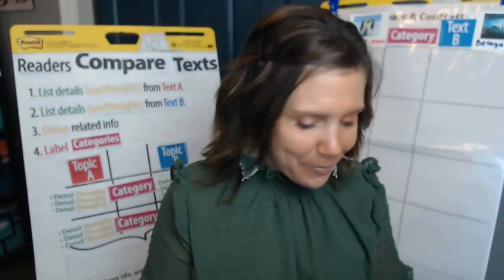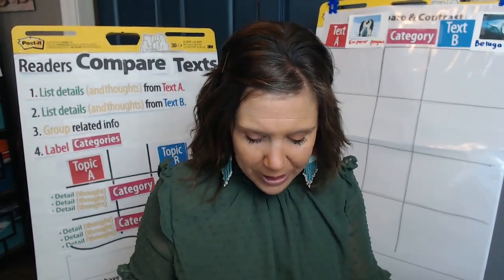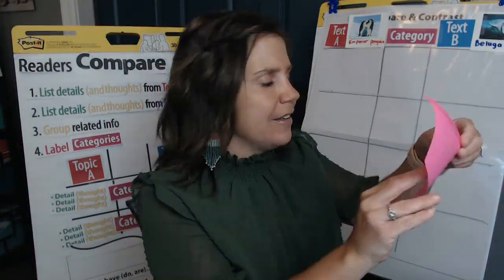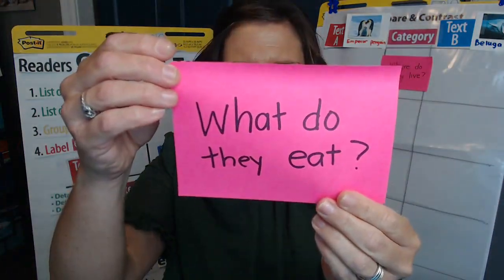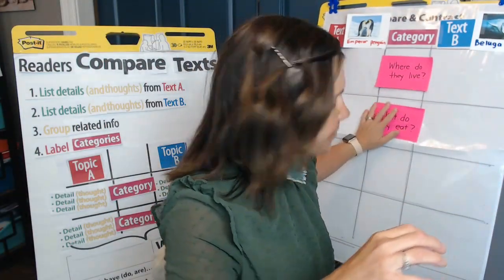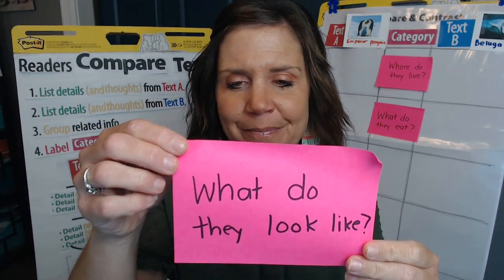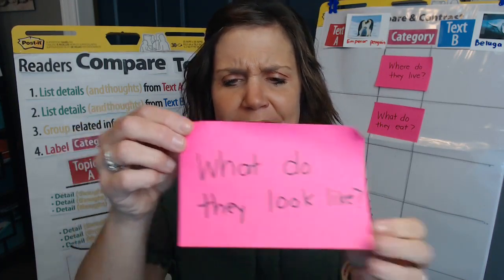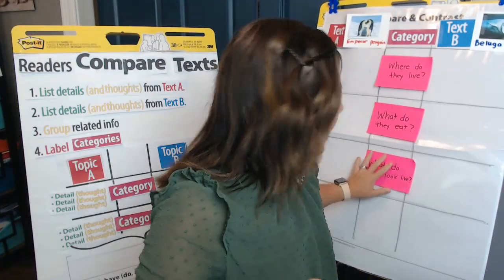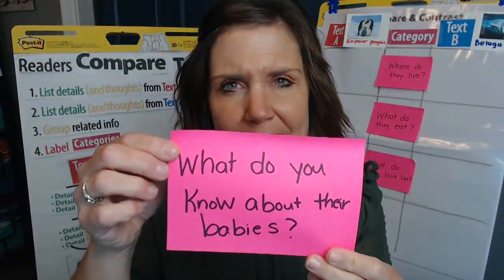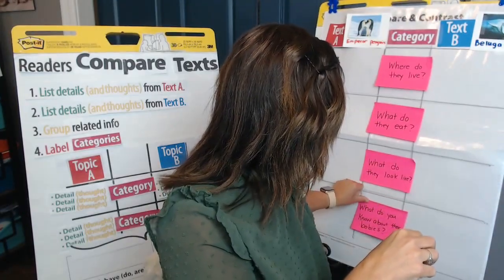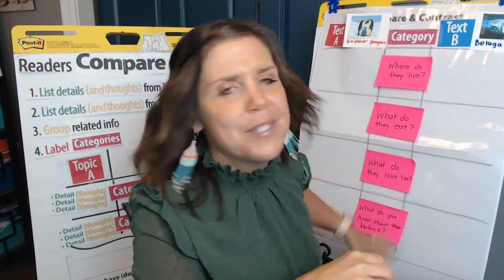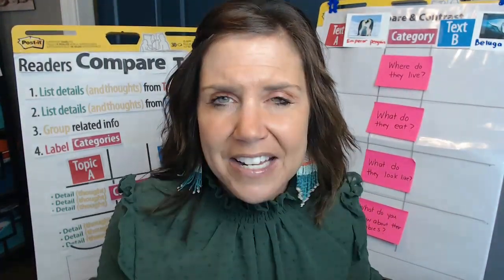Now, categories. We're going to put the categories down the middle so we know what types of details we're looking for. We're going to look at: where do they live, what do they eat, what do they look like — which could be size, shape, color, body parts — and what do we know about their babies? These are the types of details we're going to be pulling out from these texts as we go.